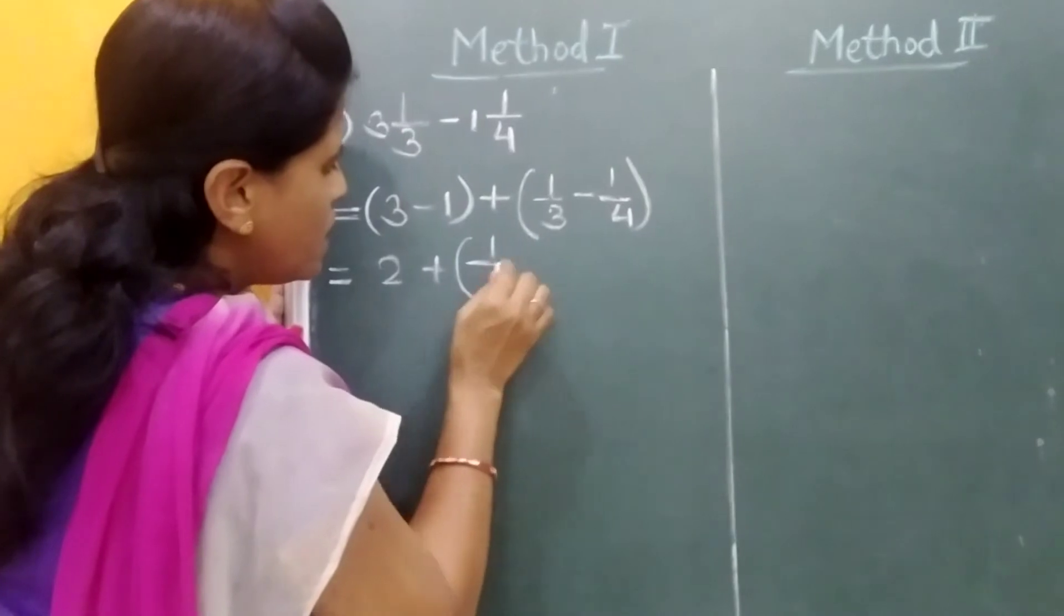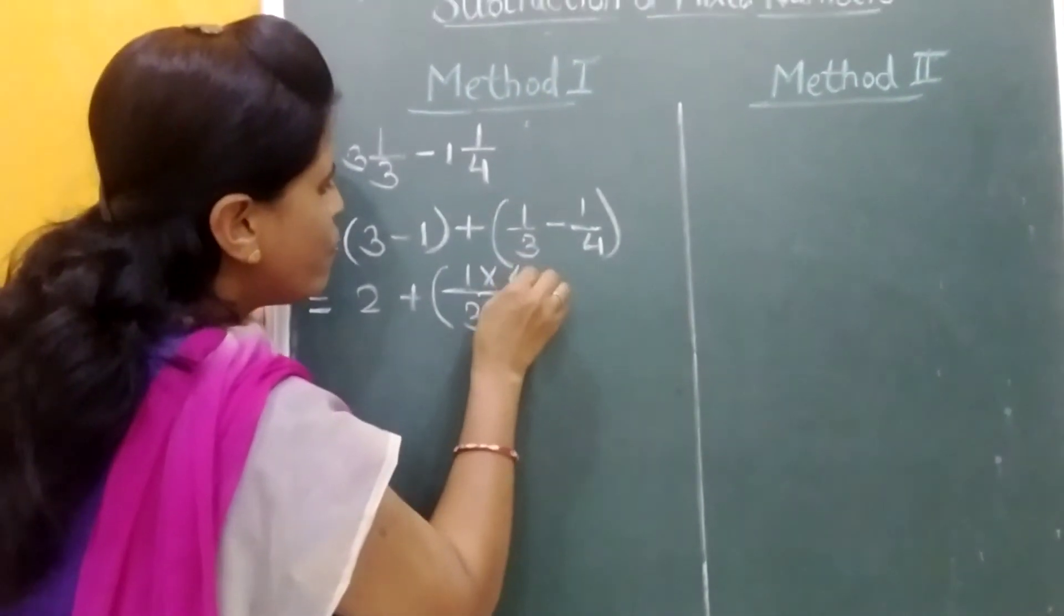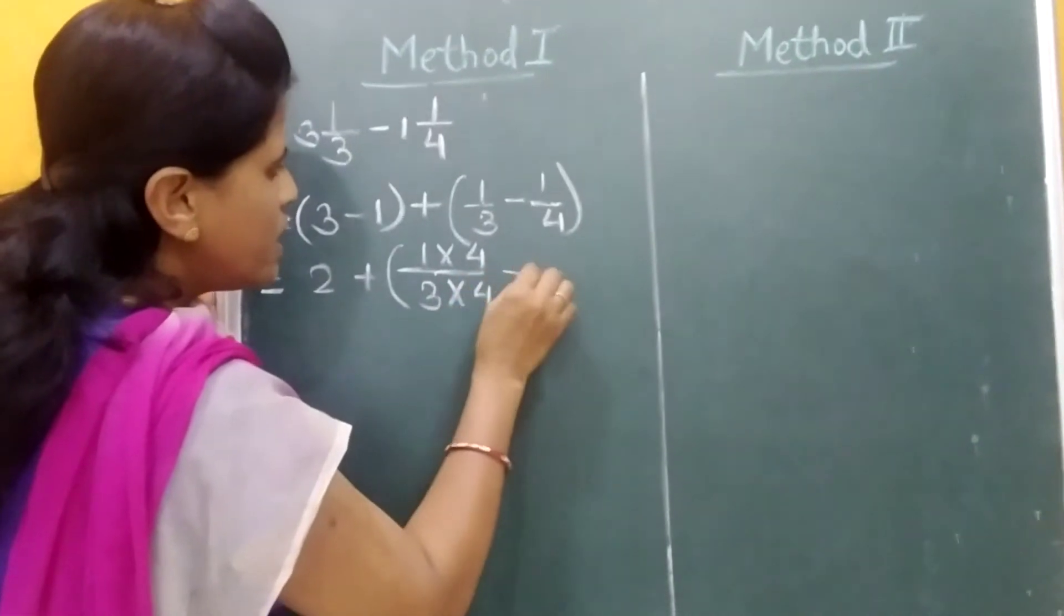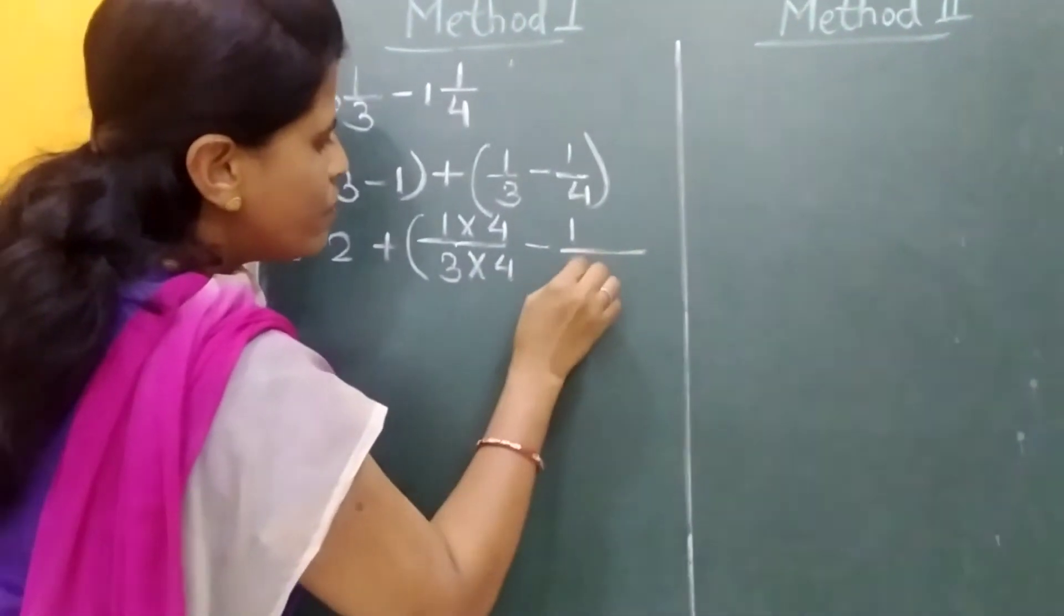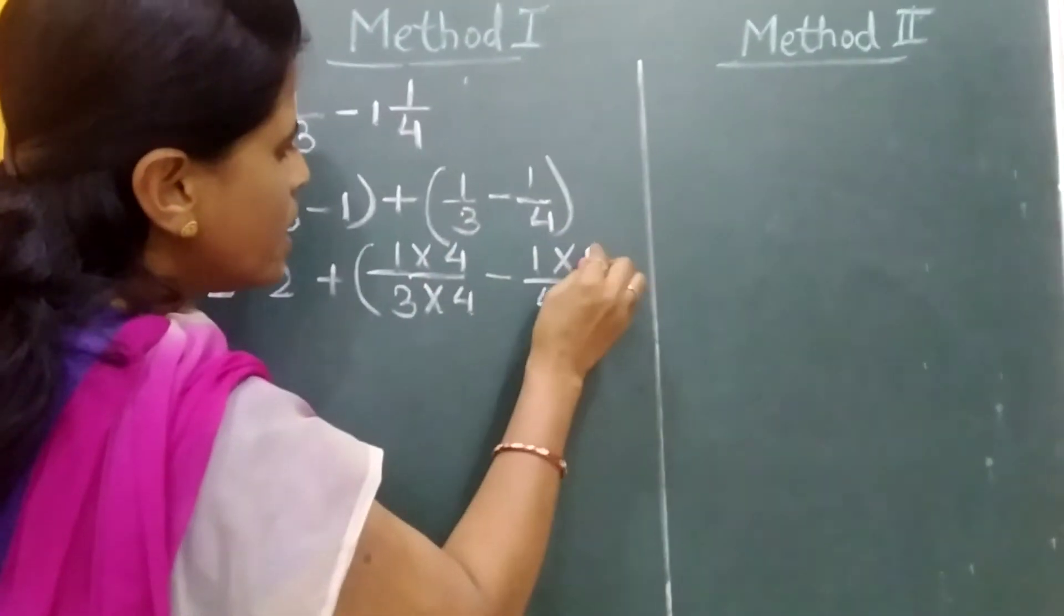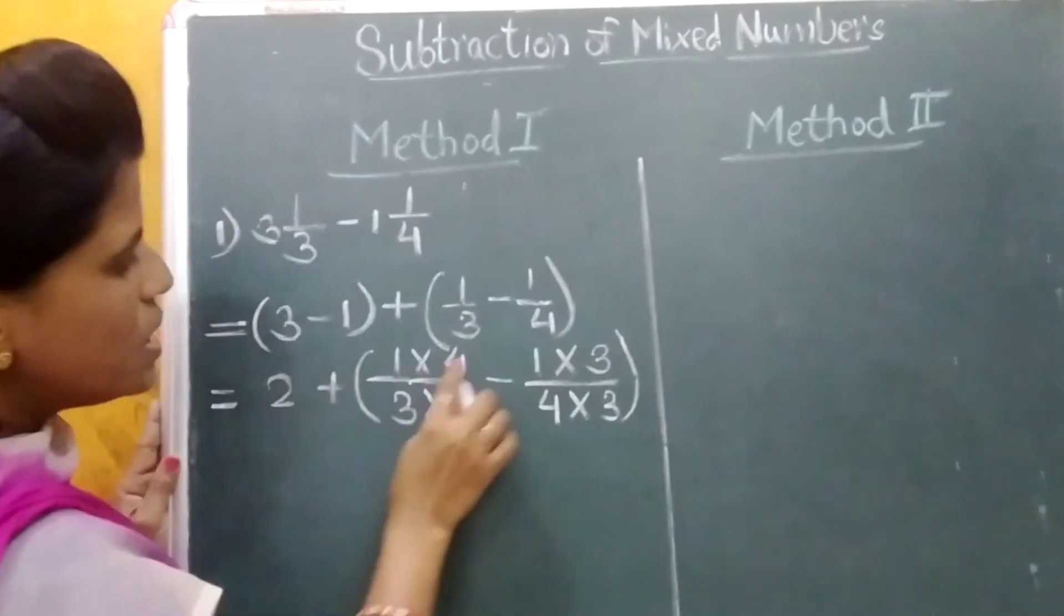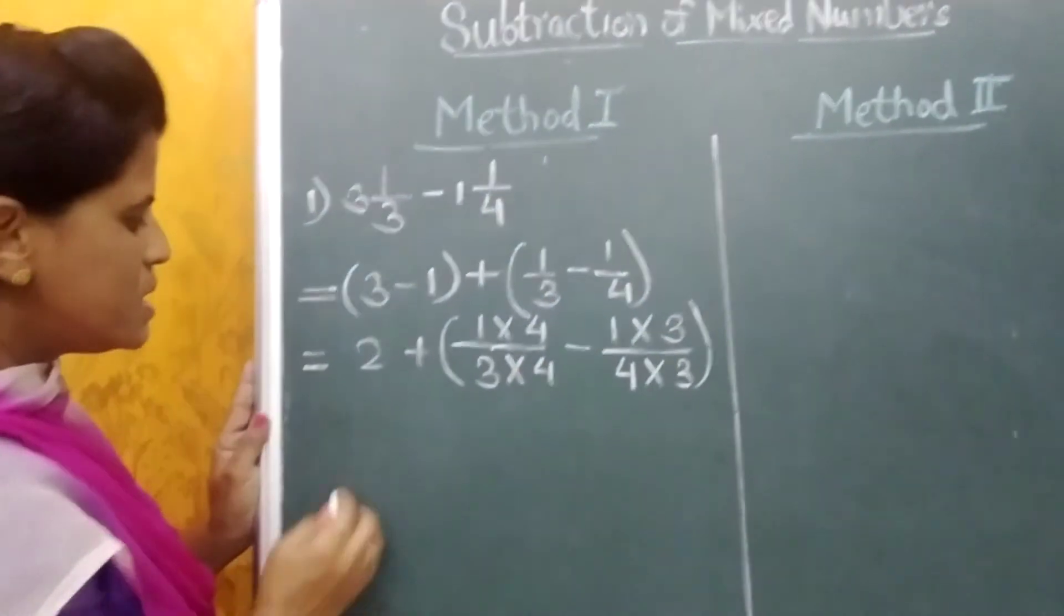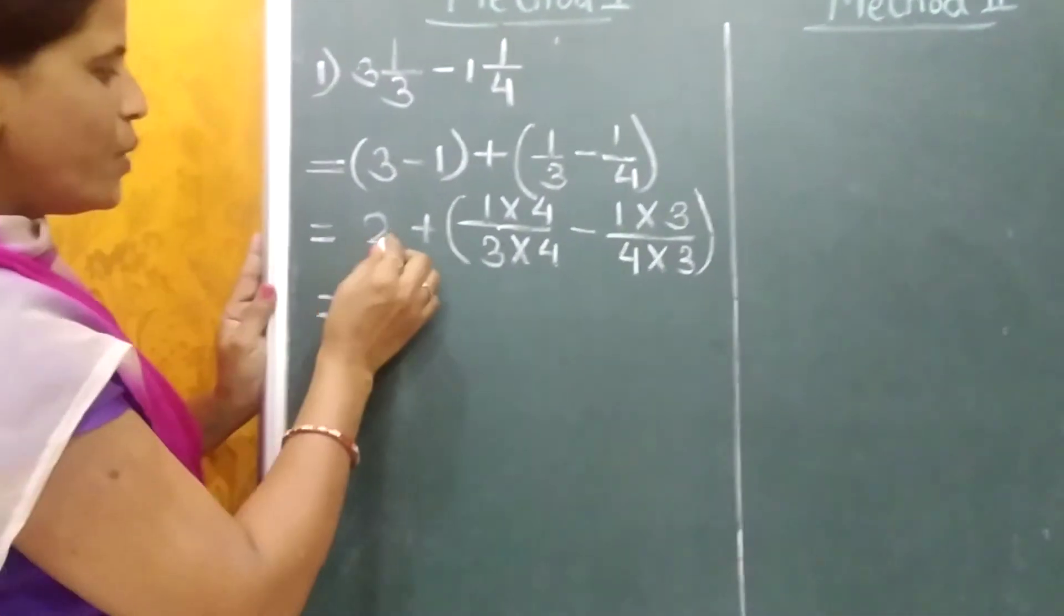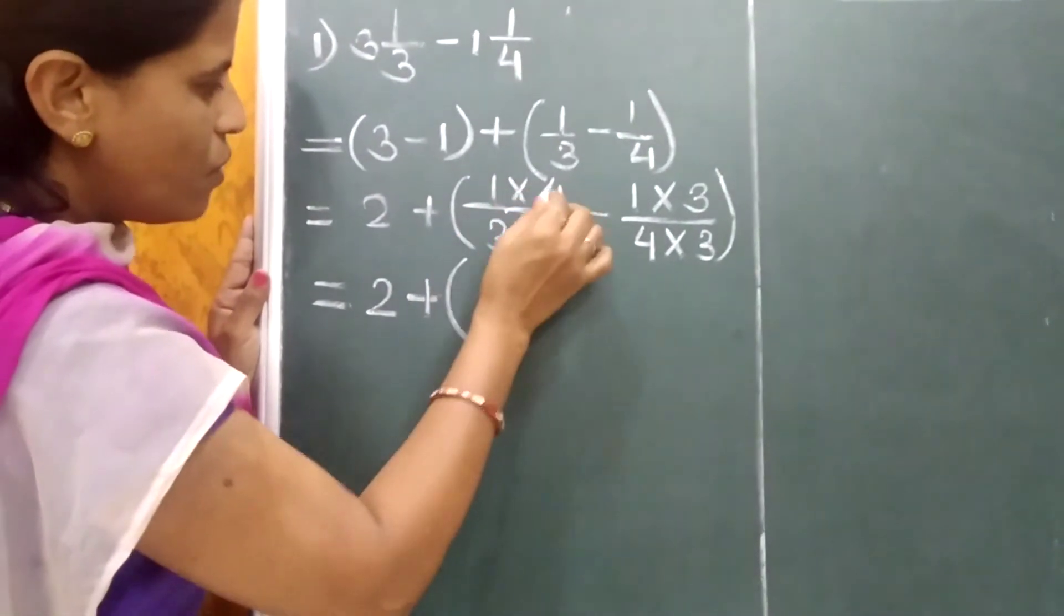1 upon 3 multiplied both with 4, minus 1 upon 4, we will multiply this by 3. Why we do this? To make the denominator same.